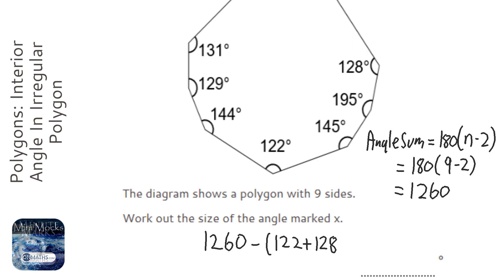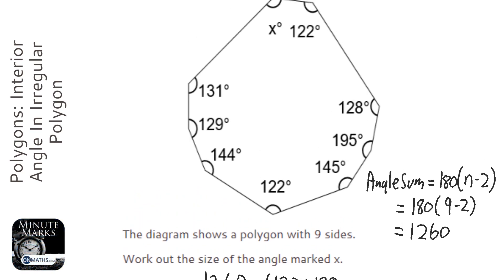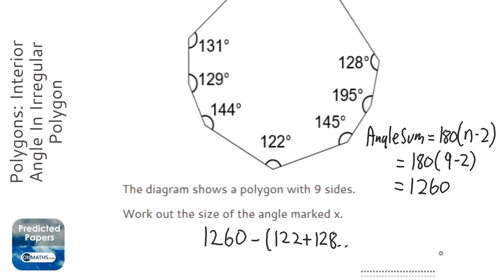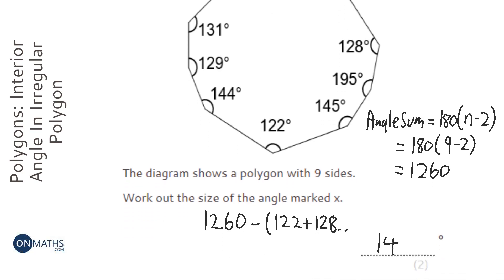128 and so on. I'm going to do it on the calculator. So 122 plus 128 plus 195 plus 145 plus 122 plus 144 plus 129 plus 131. Close brackets equals, and it comes up with 144.